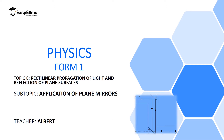Welcome to ECLIMU Learning Simplified and welcome to this lesson. In the previous lesson we discussed the rectilinear propagation of light and the reflection on plane surfaces, where we realized that light traveling in a straight line bounces back when it interacts with a smooth surface. In this lesson we are going to discuss the application of plane mirrors, especially when we have mirrors at an angle. My name is Albert — I hope you will enjoy the lesson.